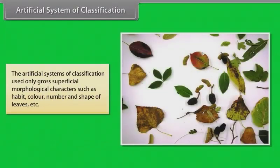The artificial systems of classification used only gross superficial morphological characters such as habit, color, number, and shape of leaves.